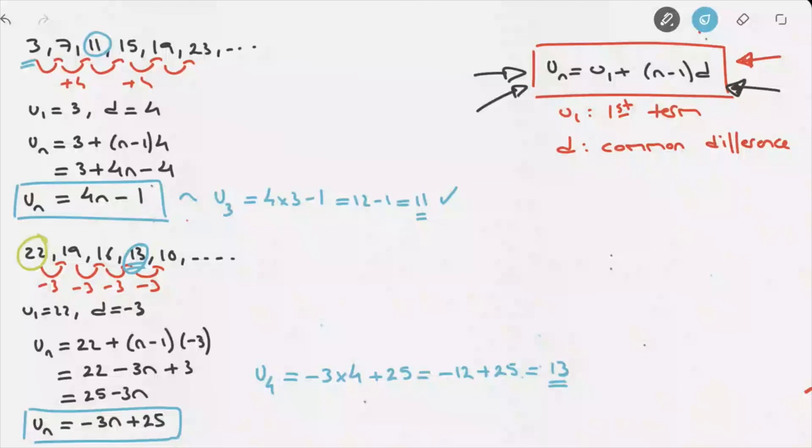And so, that's how we find the formula for the nth term of an arithmetic sequence.